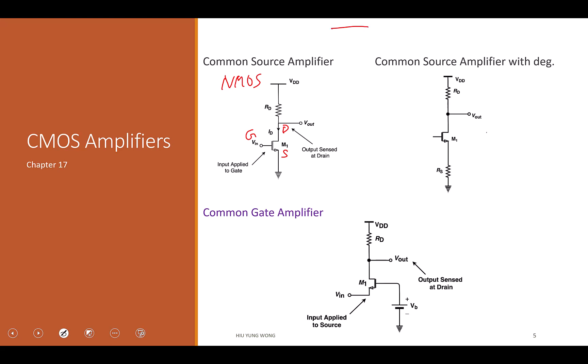If I give you something like this, you should be very confident and say that this one looks like a source follower also. Vin is here, Vout is here. Because this is PMOS, so this is source, this is drain.